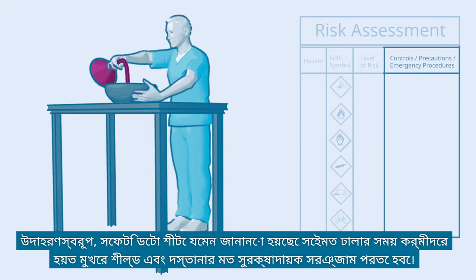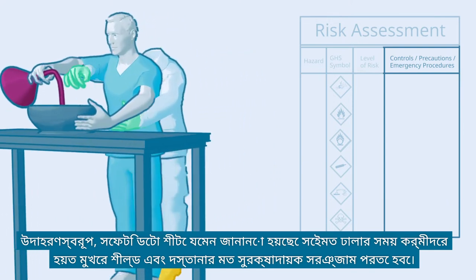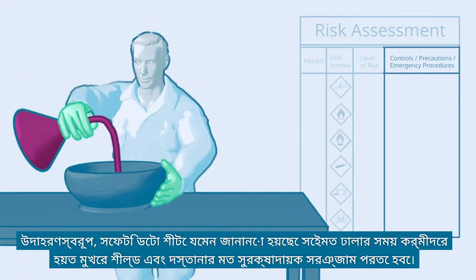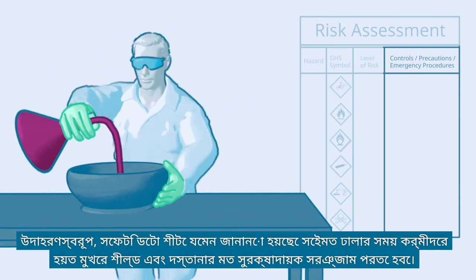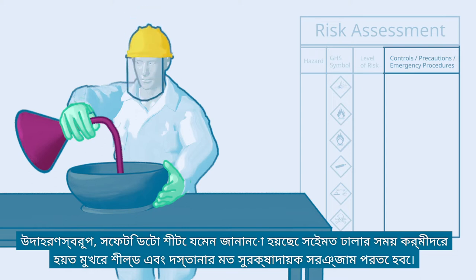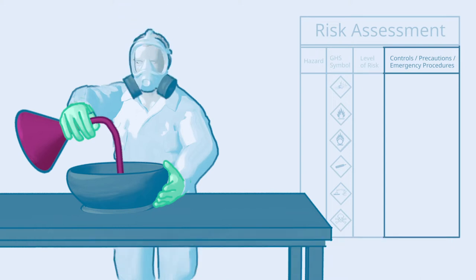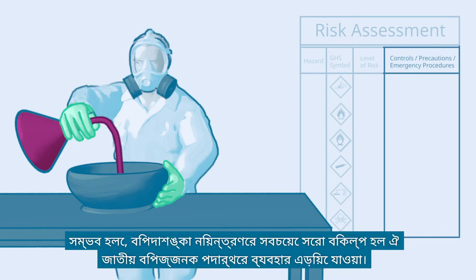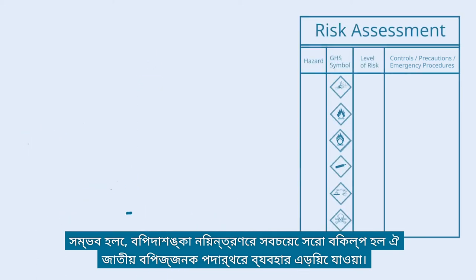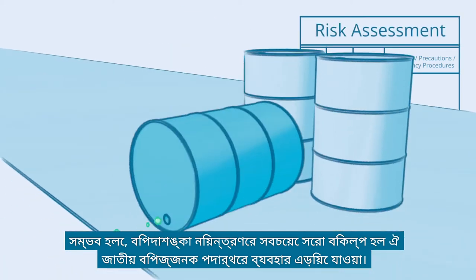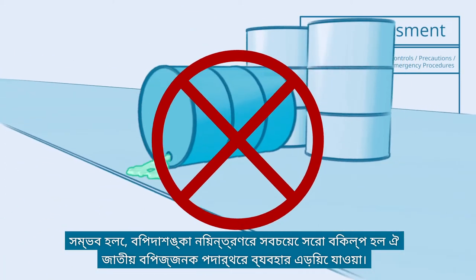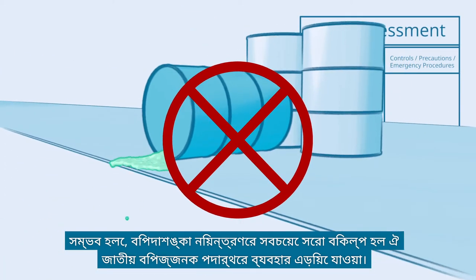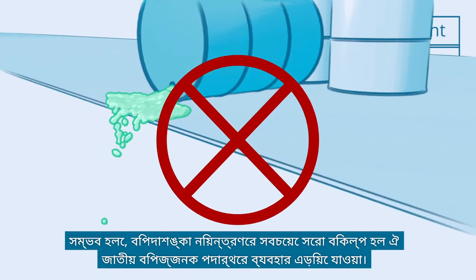For example, the worker may have to use protective equipment such as a face shield and gloves while pouring, as prescribed in the Safety Data Sheet. If feasible, the best option to control the risk is to avoid using such hazardous substances.